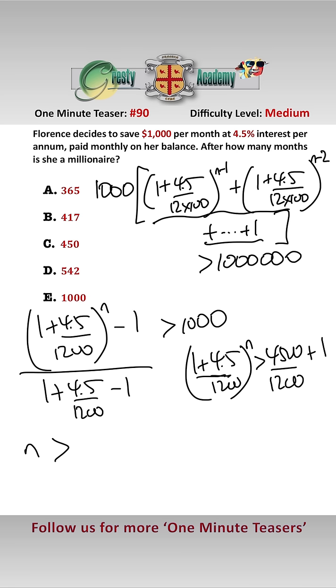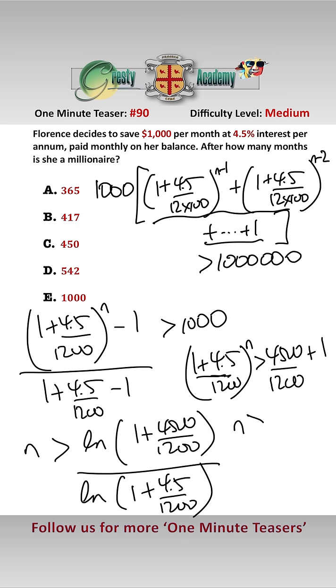Taking logs to solve this, we get that n must be greater than log of (1 + 4,500 over 1200) divided by log of (1 + 4.5 over 1200). Using a calculator that gives us n must be greater than 416.28. Rounding up to 417, that means Florence will be a millionaire after 417 months, answer B.